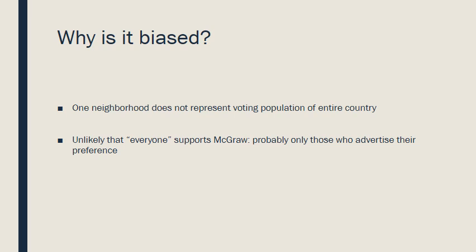If you're in a rich neighborhood, people might favor one type of candidate; in a poor neighborhood, a different type. Whether it's rural or urban also changes things. So the one neighborhood is not at all representative of the entire country. Even within the neighborhood, it's unlikely that everyone supports McGraw — it's probably only those who advertise their preference with lawn signs. So this is a biased, weak argument that doesn't prove McGraw will win.